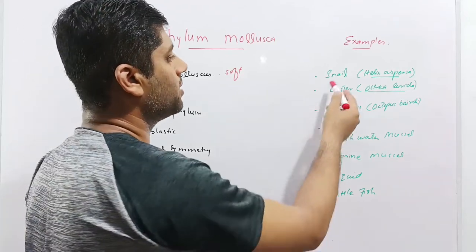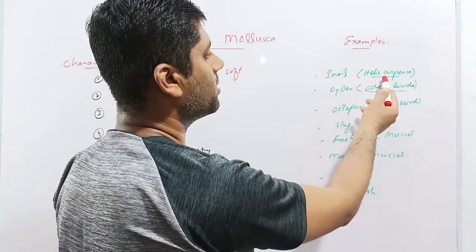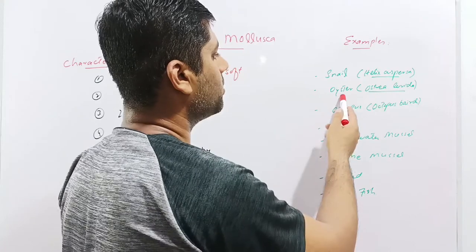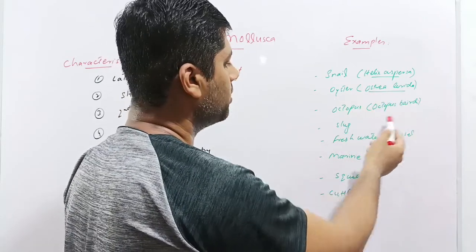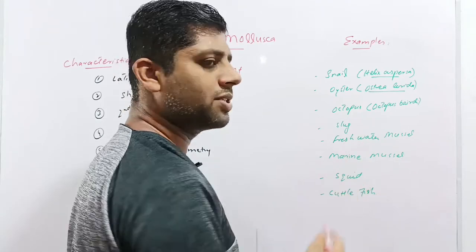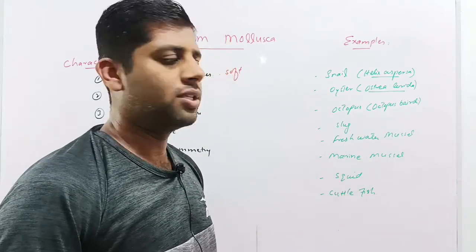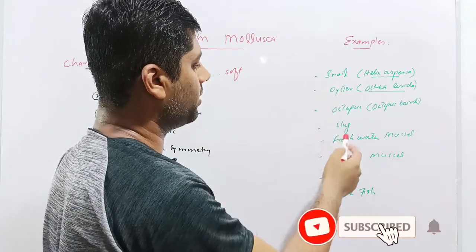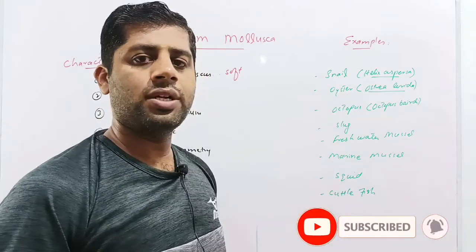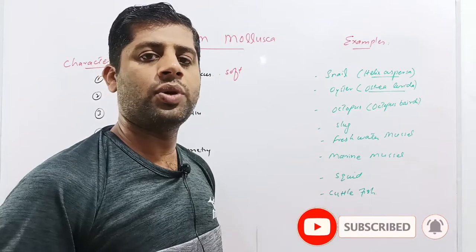Common examples of the phylum mollusca are snail with its biological name Helix aspersa, the oyster or Ostrea edulis, octopus or Octopus vulgaris, slug, freshwater mussel, marine mussel, squid and cuttlefish. These are the common examples of phylum mollusca, out of which the snail and slug are terrestrial animals, while rest of the animals are all aquatic.